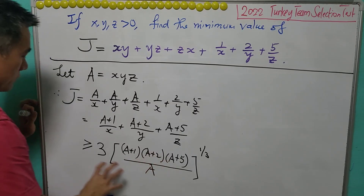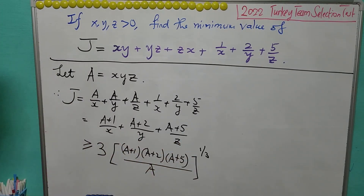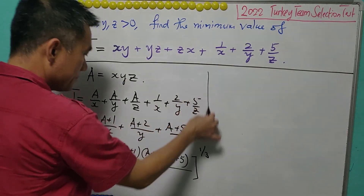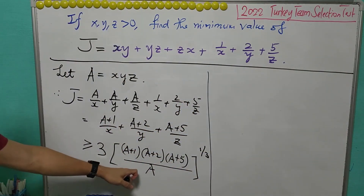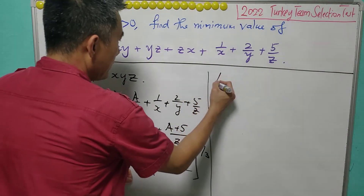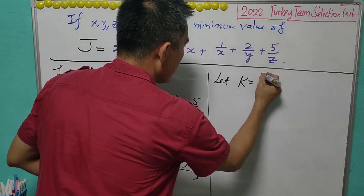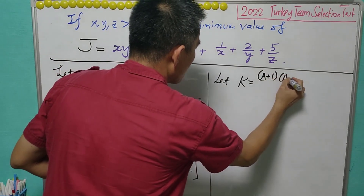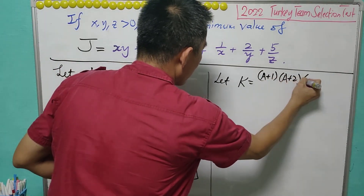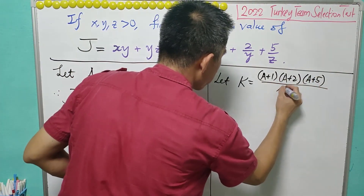We need to consider what is the minimum of this value. We let this be K, where K equals (A plus 1)(A plus 2)(A plus 5) over A.